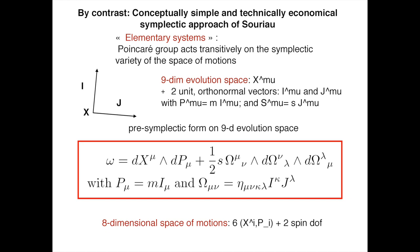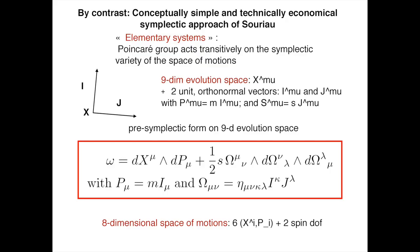Souriau discovered and created the idea that the pre-symplectic form on this nine-dimensional evolution space is given by this formula, where evidently the first part dx dp is the usual part, and the Souriau part is — I did not respect the Souriau notation here, because Cartan had already done symplectic mechanics with his notation.